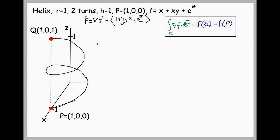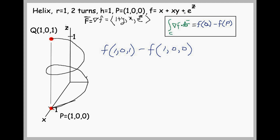We'll start with the right-hand side in blue. We write the potential function f evaluated at Q, which is (1, 0, 1), minus the potential at P, which is (1, 0, 0). At Q: x is 1, y is 0, z is 1, giving us 1 plus 0 plus e to the 1, that's 1 plus e. At P: 1 plus 0 plus e to the 0, which is 1 plus 1, or 2. So the right-hand side gives us e minus 1.